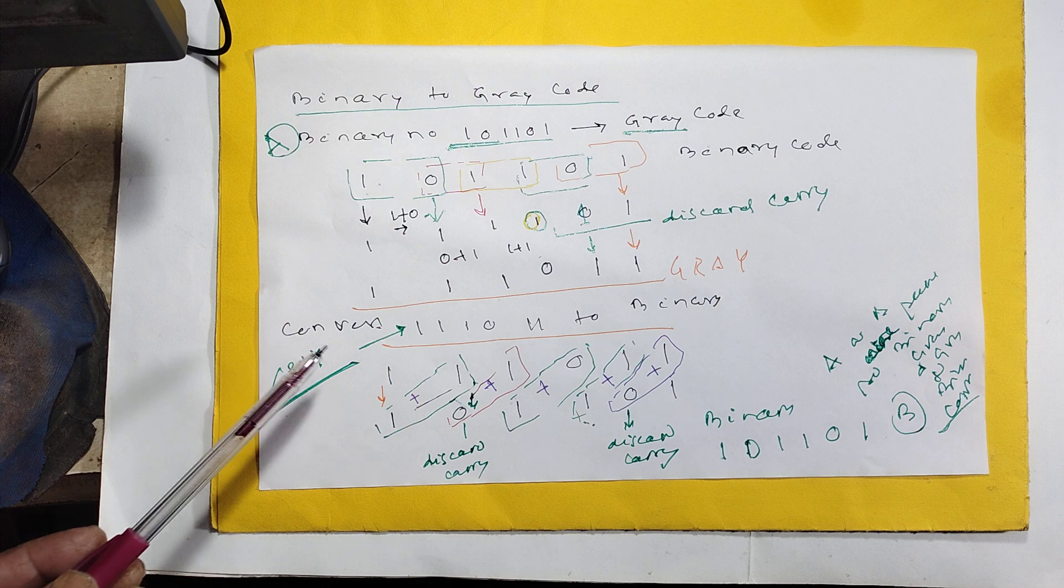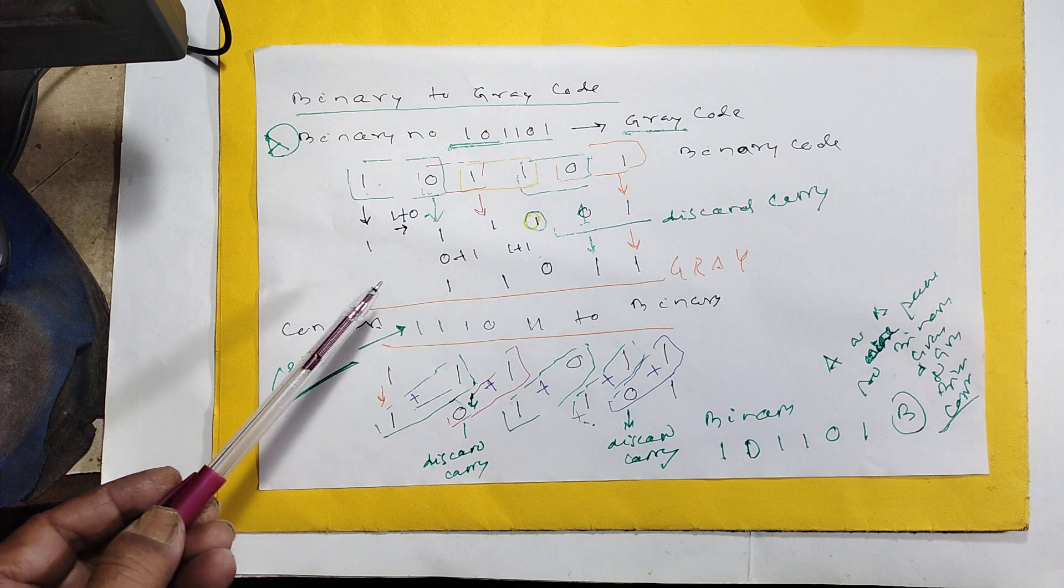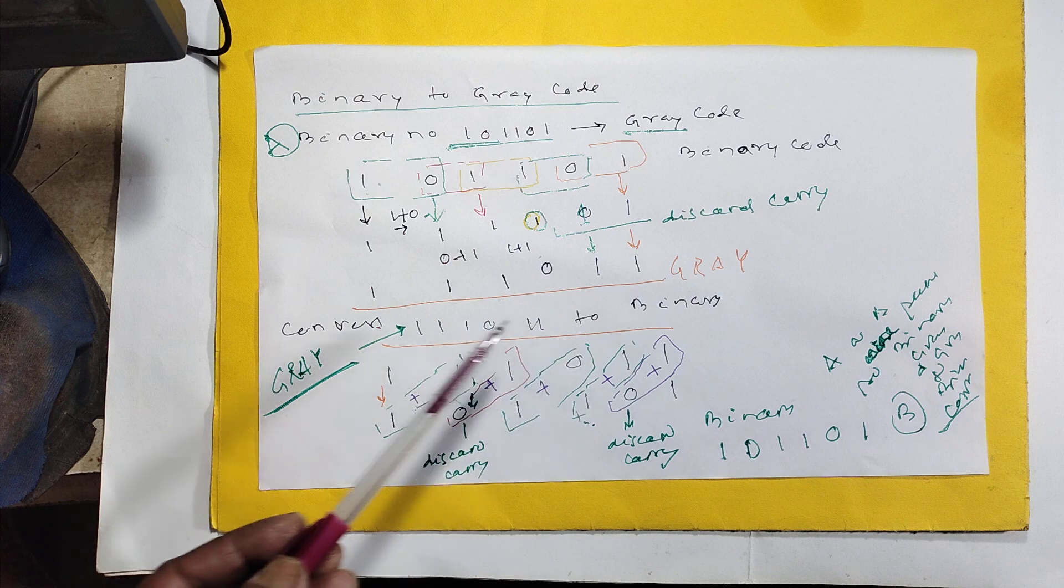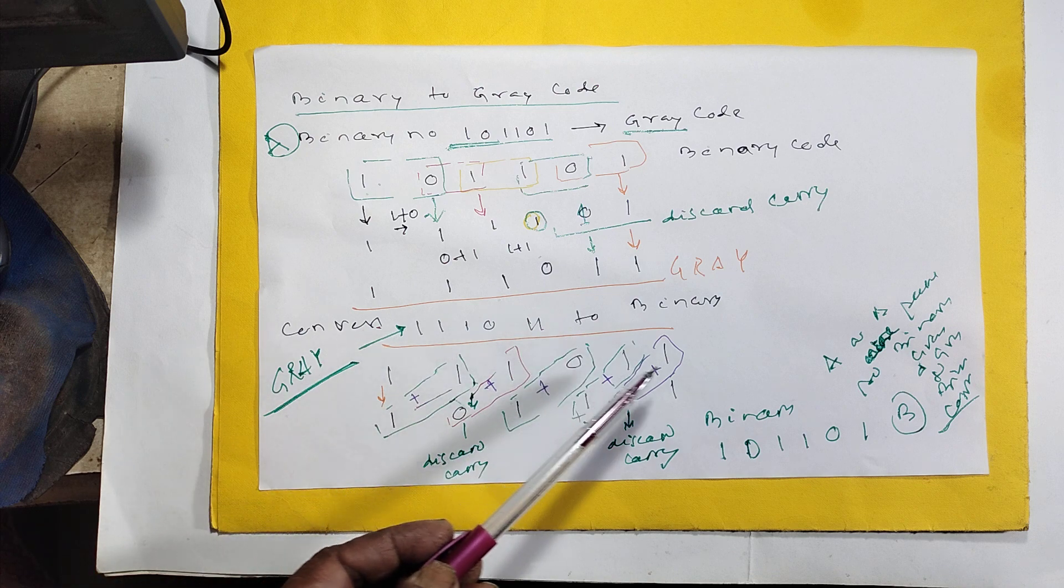We want to cross check it. Gray to binary. Now what is the gray number? 1, 1, 1, 0, 1, 1.